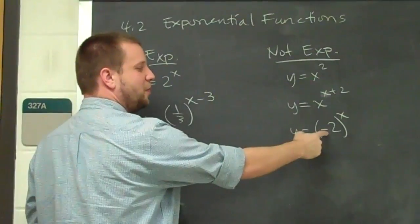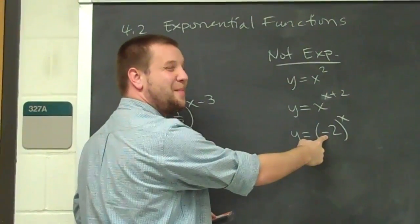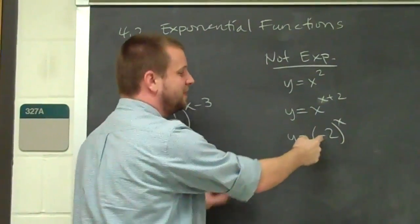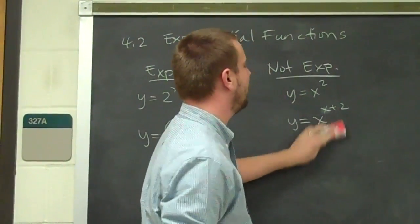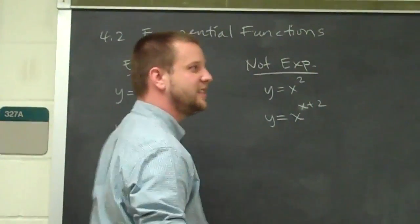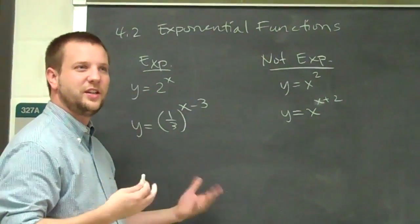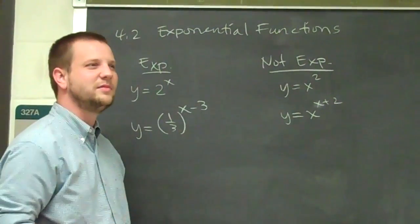The one thing that we're going to have a problem with is if our base is not a positive number, then that's an issue. But somebody could argue that that still is in a sense an exponential equation, it just has a restricted domain. So let's just leave that alone, shall we?